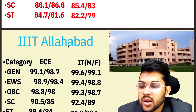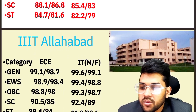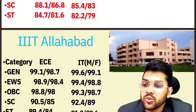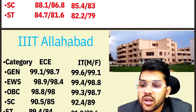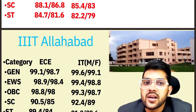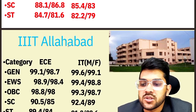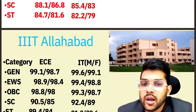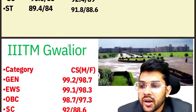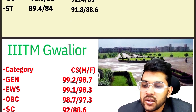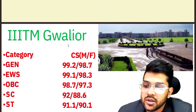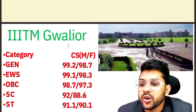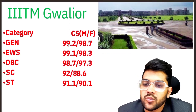For IIIT Allahabad: 99.1, 98.9, 98.8, 90.5, 89.4 — this is for EC; IT and EC are the two branches available. After the slash is the female student cutoff. For IIIT Gwalior — CSE male: 99.2, 99.1, 98.7, 92, 91.1. Female cutoffs available after the slash.